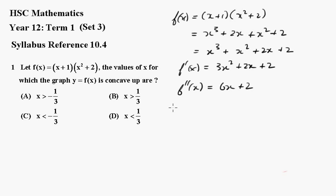Now if it's concave up it must be greater than 0. Therefore 6x plus 2 must be greater than 0. 6x must be greater than minus 2. So x must be greater than minus one third. Which of course gives you a.